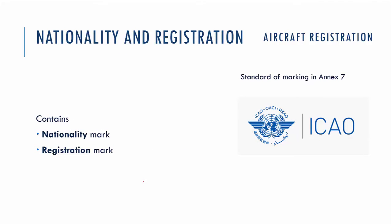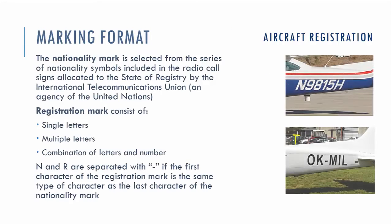Let's switch to nationality and registration marking, which is regulated by Annex 7. The nationality mark — for example, the first letter 'N' is the nationality marking for the United States, and 'OK' is the nationality mark for the Czech Republic. The nationality mark is selected from a special registry issued by the International Telecommunication Union. This registry contains all countries and their nationality marks, and each country must use those nationality marks from this registry.